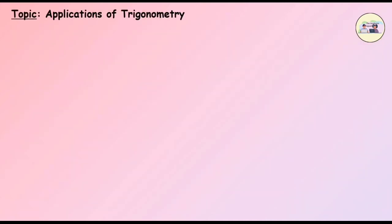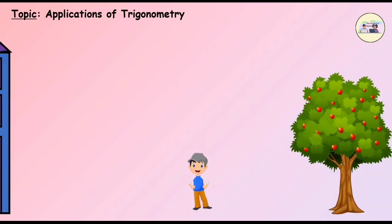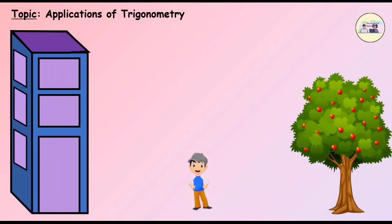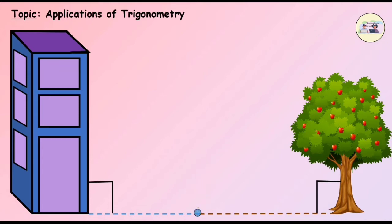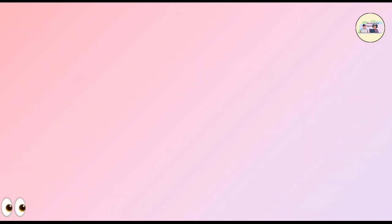Application of Trigonometry: Trigonometry is widely used in geometry to find the height of tall objects like trees, buildings, towers, etc., using the distance of the observer from the object. Remember, the position of the object is considered perpendicular to the ground and an observer is considered as a point object. We also require the angle of observation for the calculation.